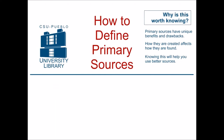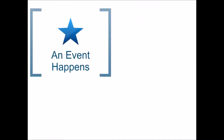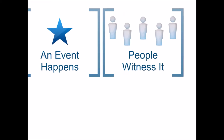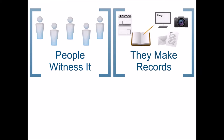When it comes to defining primary sources, it's helpful to think about how history gets written. First, an event happens, something takes place, and people witness that initial event. Those people then create records describing that initial event. So these are first-hand accounts. It could be a photograph, a newspaper, a letter, anything. The important thing is that it was created by someone who was actually there.